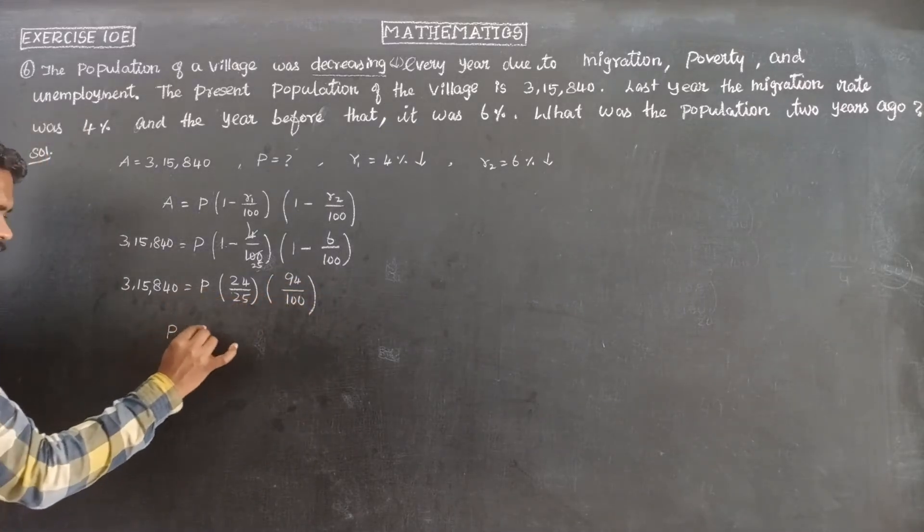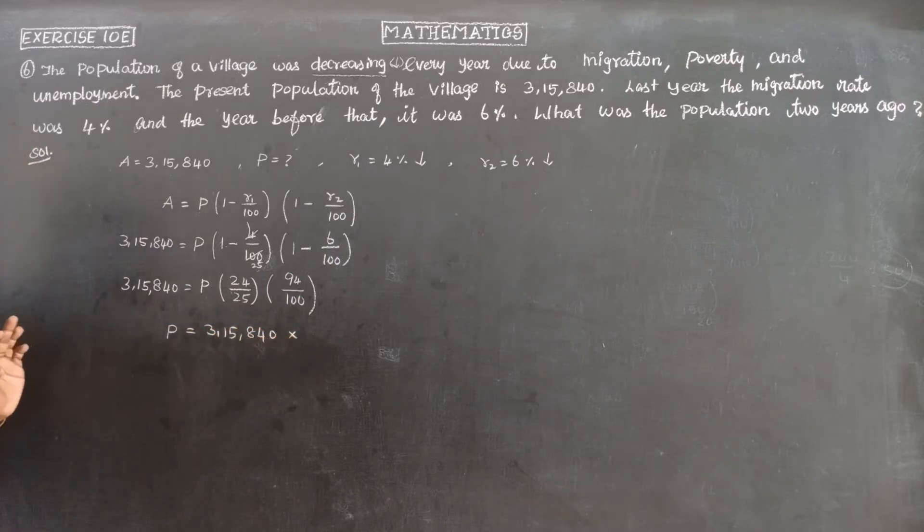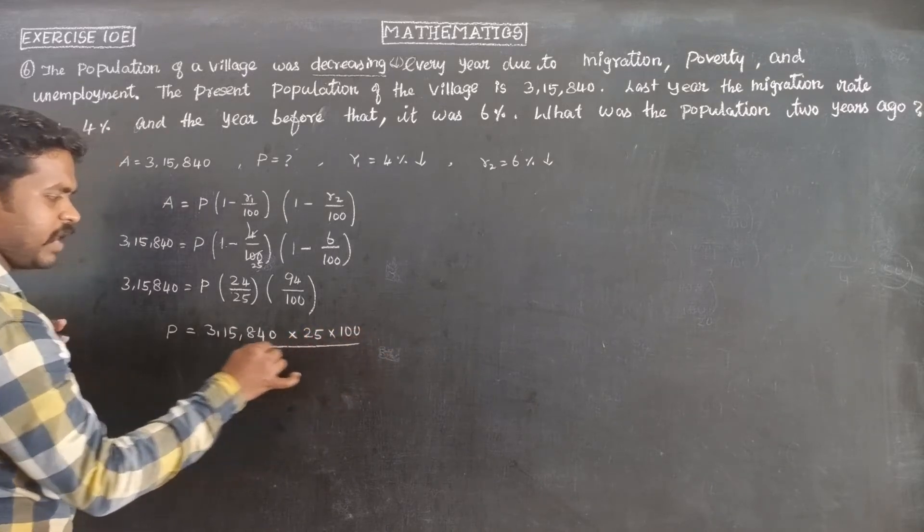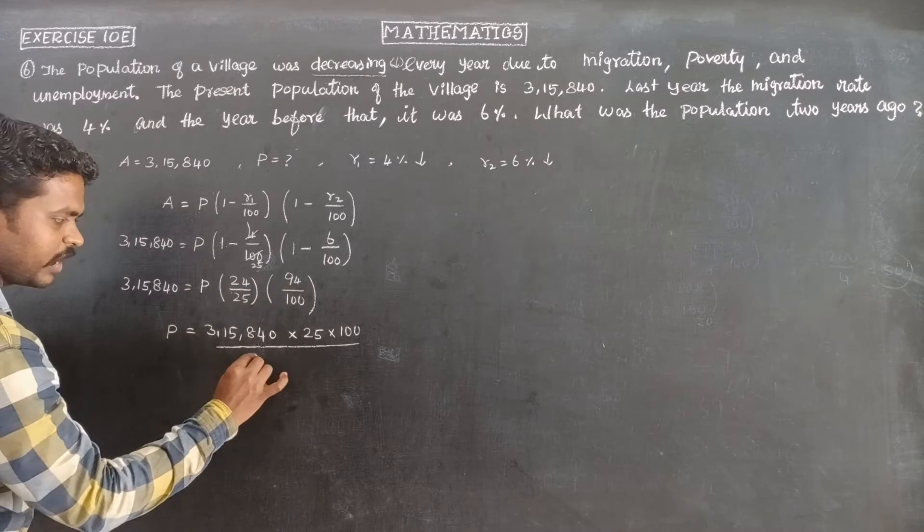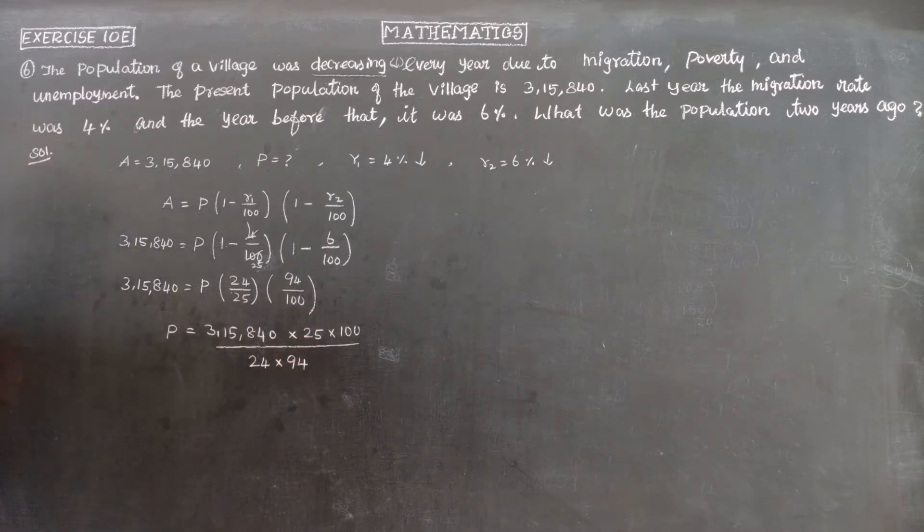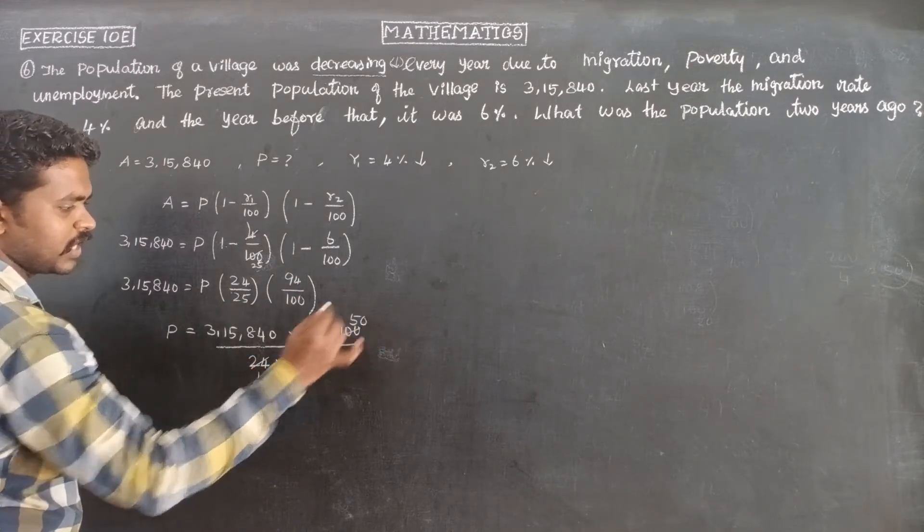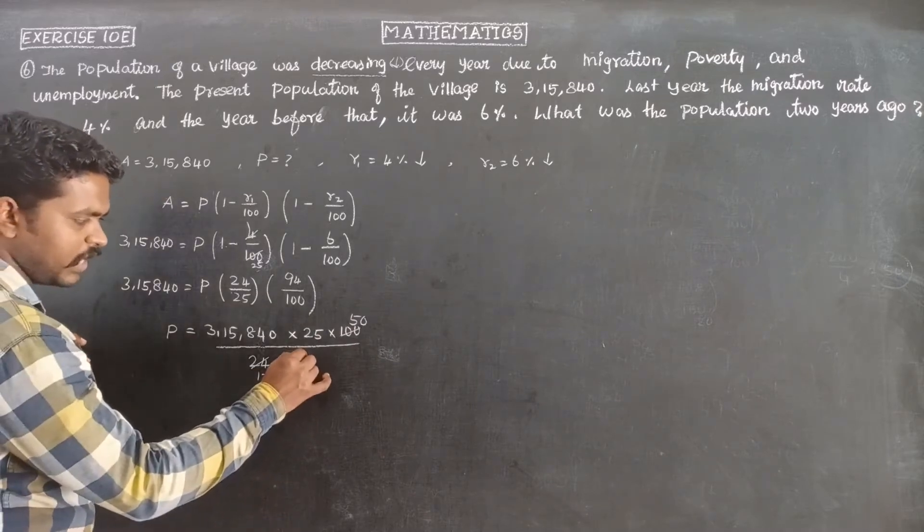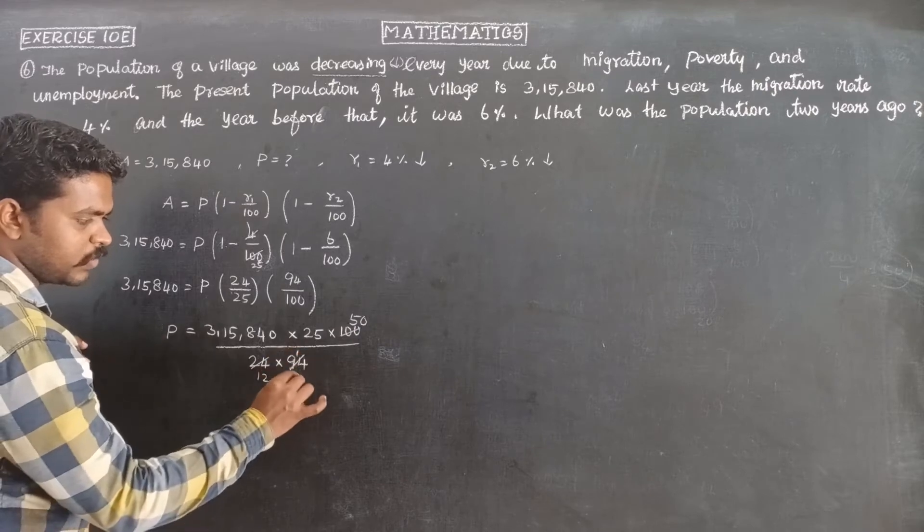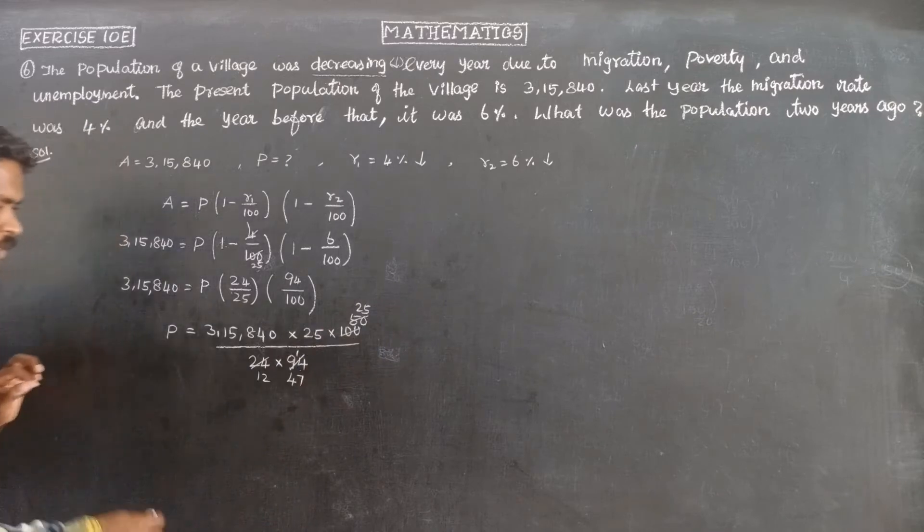So 3,15,840 equals P times (100 minus 4)/100 times (100 minus 6)/100. That's 96/100 times 94/100. Simplifying by cancellation: 3,15,840 times 25 times 100 divided by 24 times 94. Canceling terms: 4 and 24 becomes 6. The 2s cancel, giving us 6,720 times 625 divided by 12 times 47.